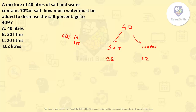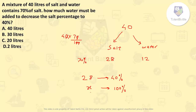How much water must be added to decrease the salt percentage to 40%? Right now salt percentage is 70%. We want salt to be 40% in the new mixture. The current salt quantity is 28 liters, and this should become 40% of the new total mixture. So if 28 is 40%, then 100% of the new mixture is X = 28 × 100 ÷ 40 = 70 liters. So the new total quantity of mixture should be 70 liters.